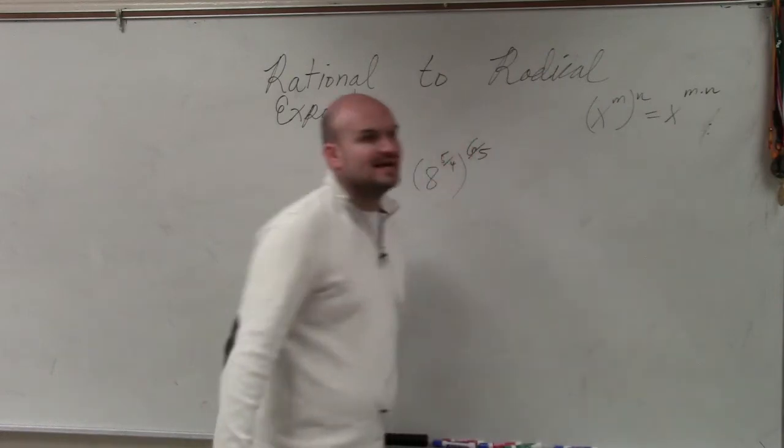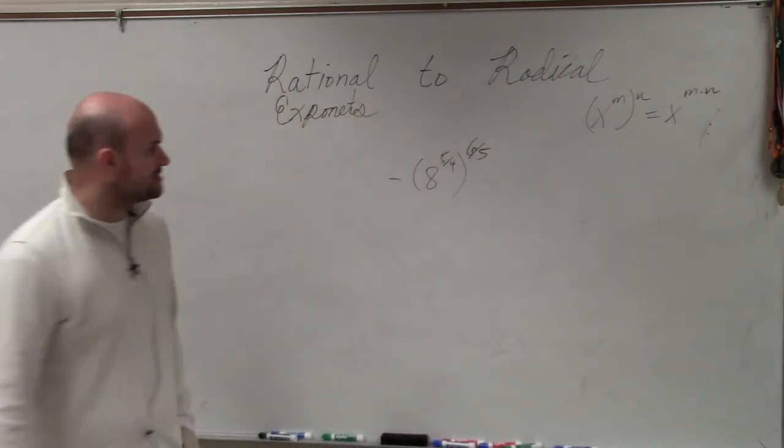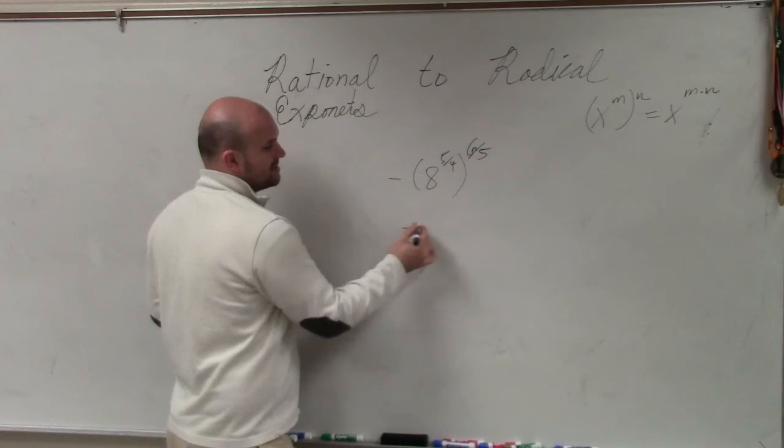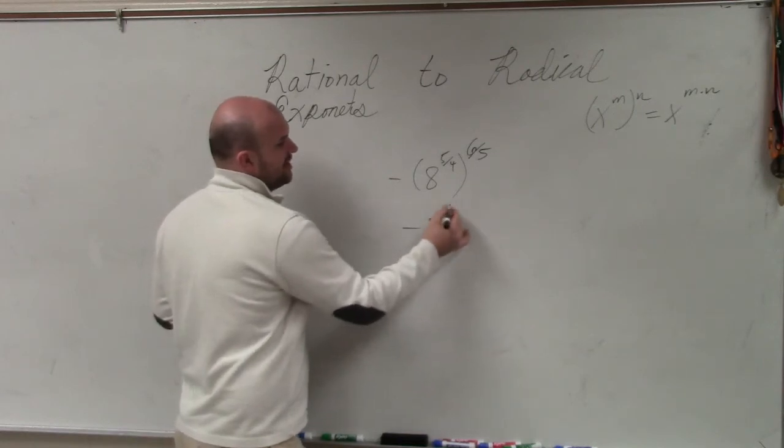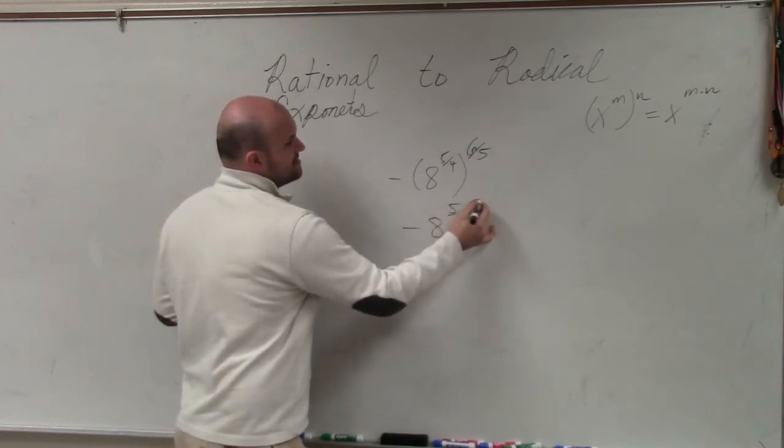So now when you raise an exponent to a power, you simply multiply the powers. So here, again, I'm just going to have this negative. So this is going to be 8 to the 5 fourths times 6 fifths.